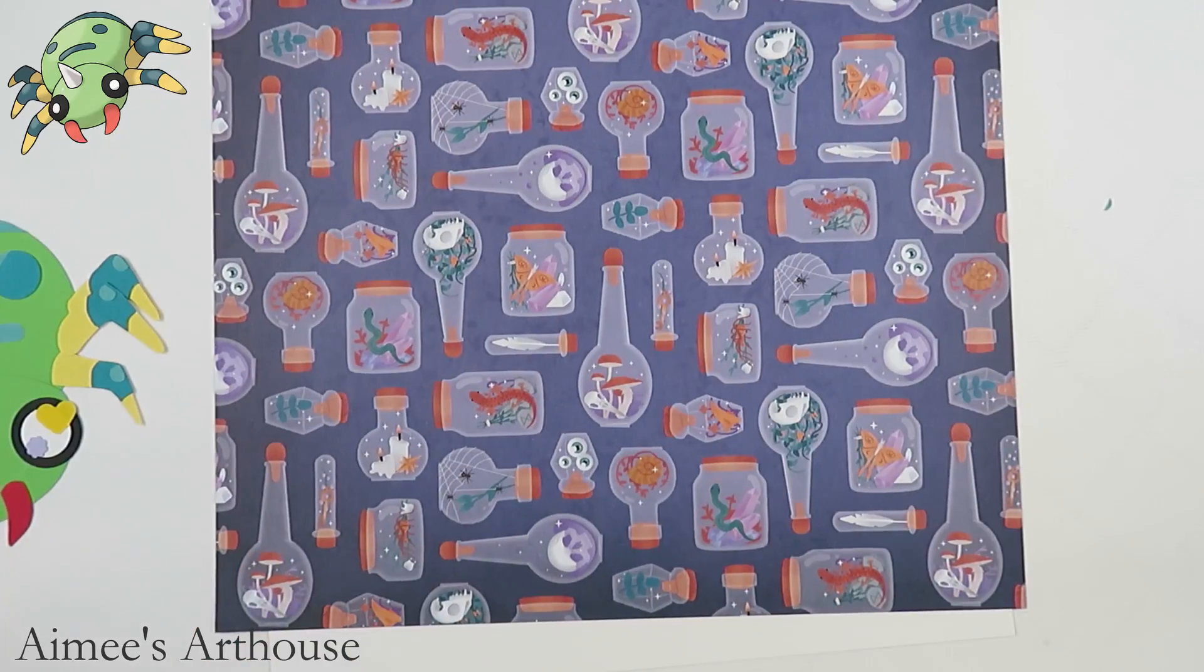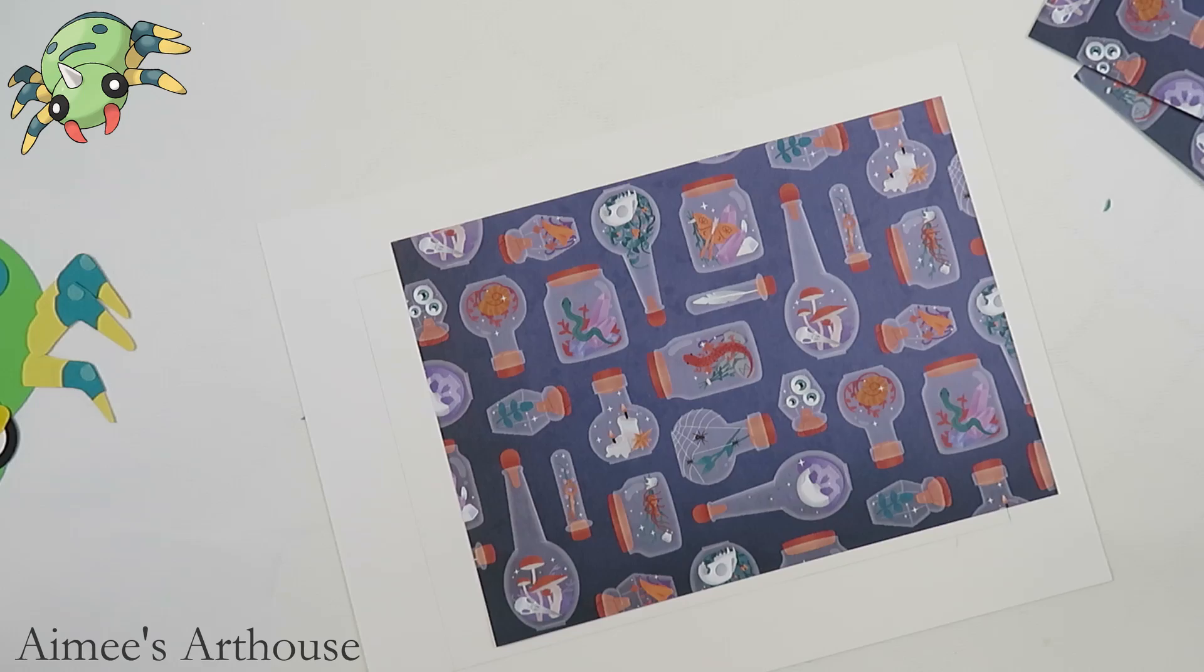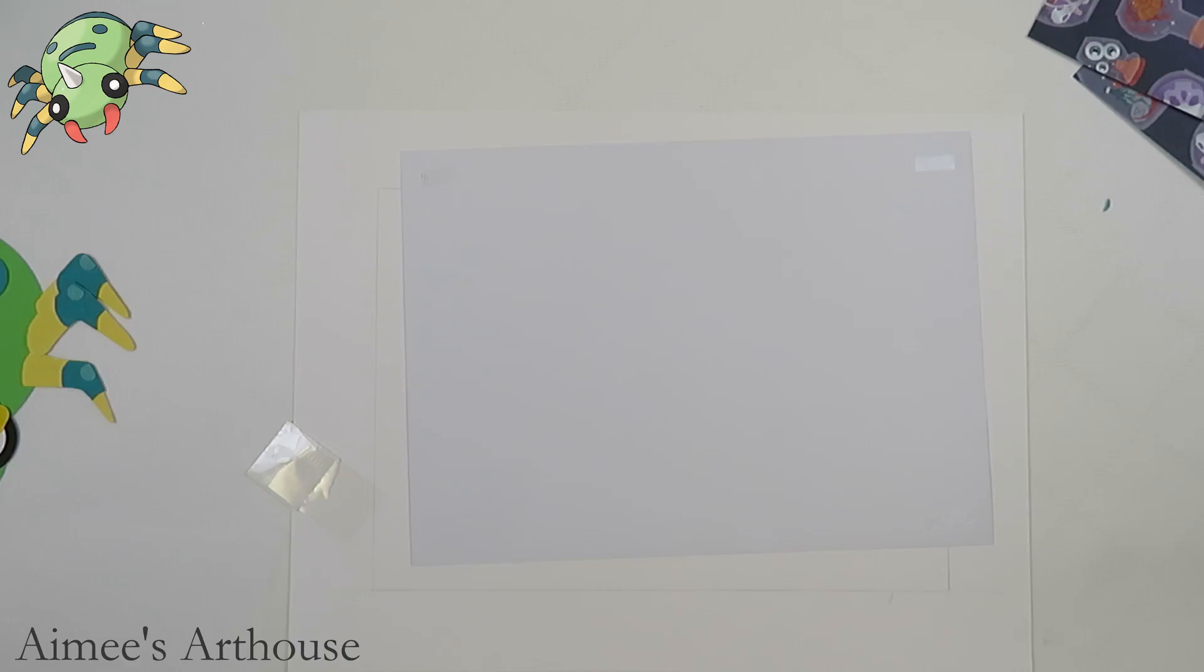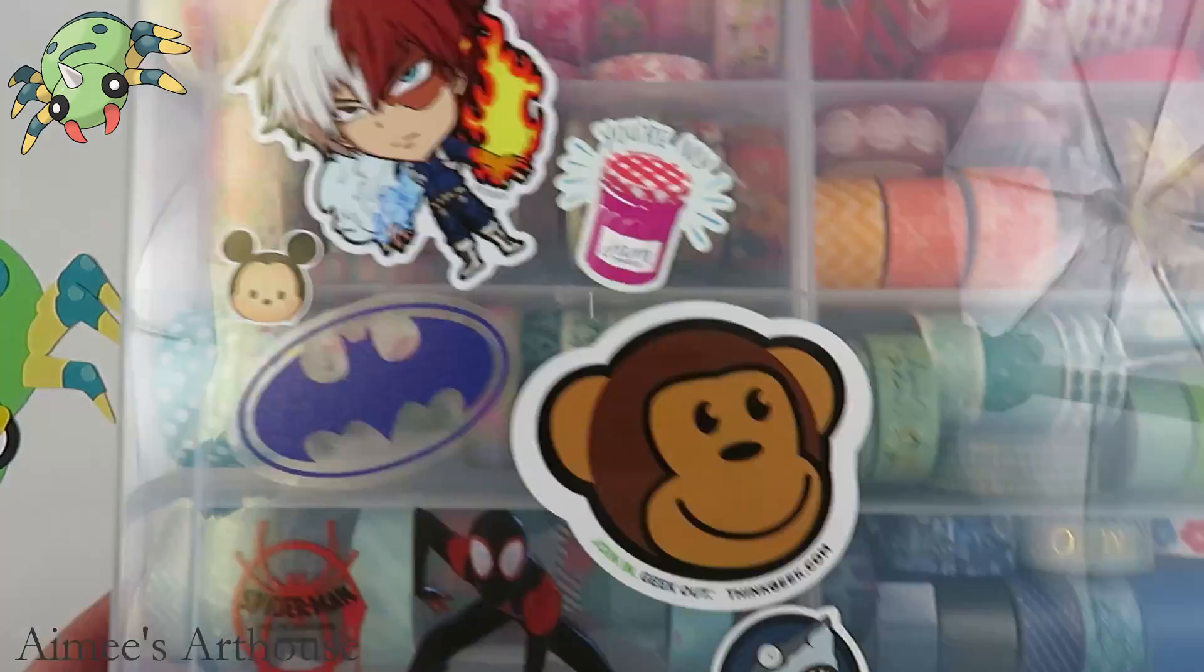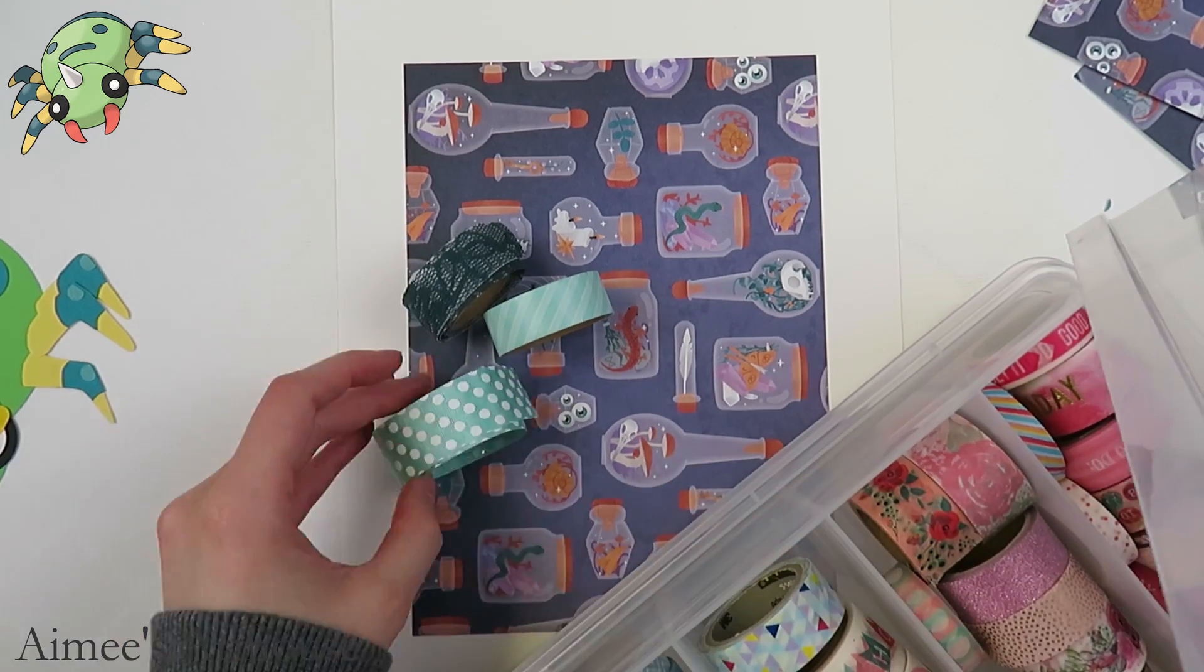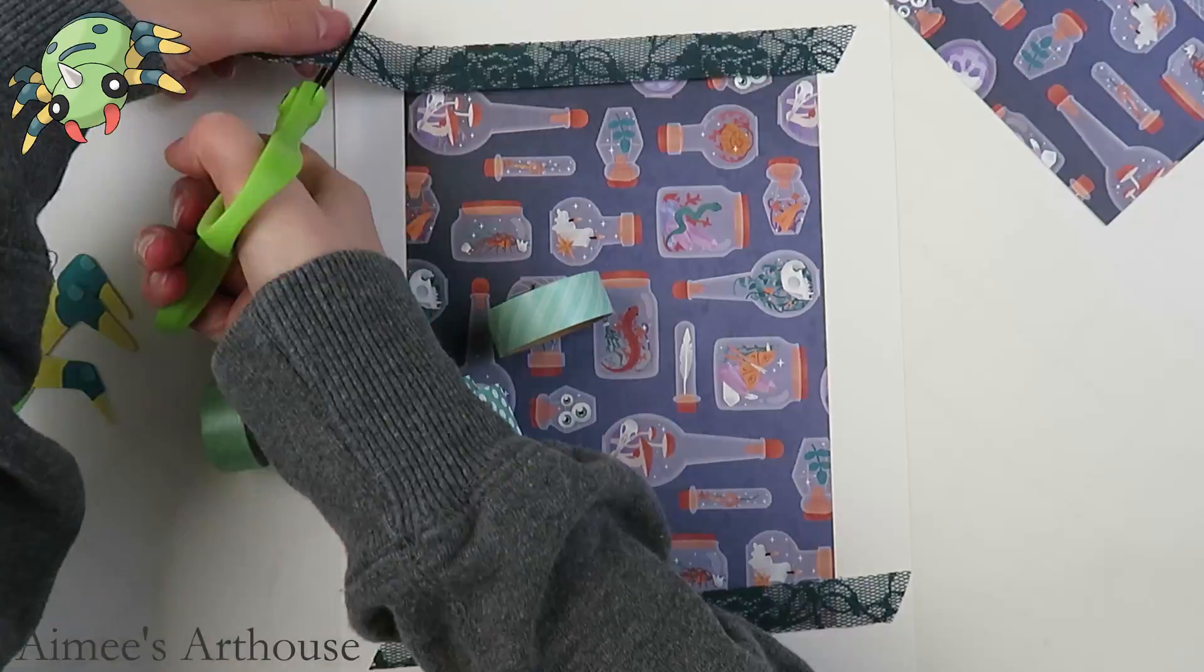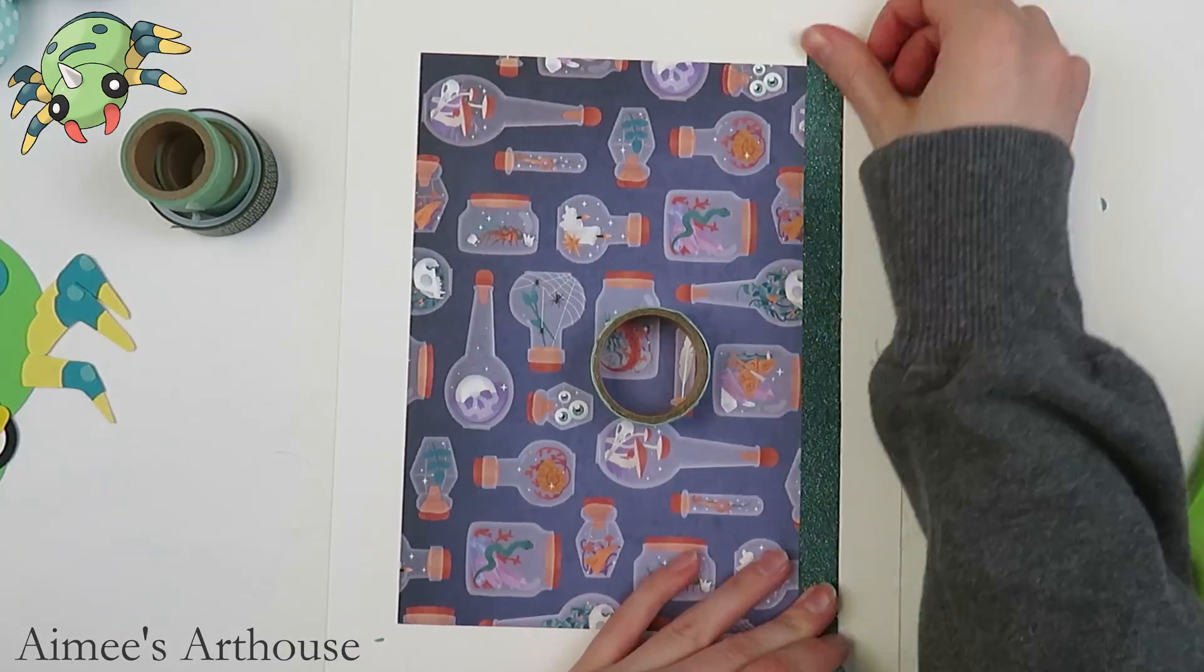And I love the background paper I have for this. It's little jars with eyeballs and newts, and it looks like something straight out of a witch's cabinet, which is really amazing. I have used up a lot of my Halloween papers, so I'm really, really glad that I stuck with it this month, and that I purchased those because it was such a good investment. It was like five dollars for 50 sheets, and I've made so many Pokemon with them.